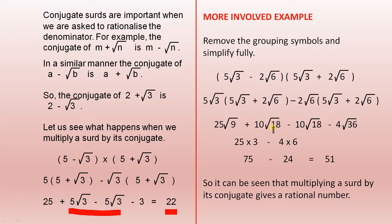10 the square root of 18 minus 10 the square root of 18. Then that cancels itself out. And 4 the square root of 36 is 4 times 6. So that's 75 minus 24 and that gives us 51. So it can be seen that multiplying a surd by its conjugate gives a rational number.